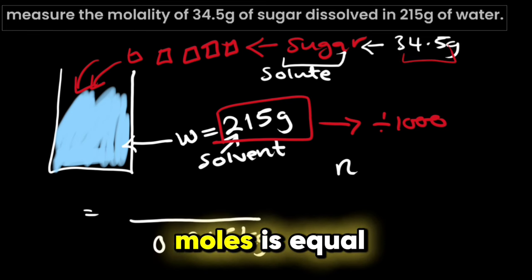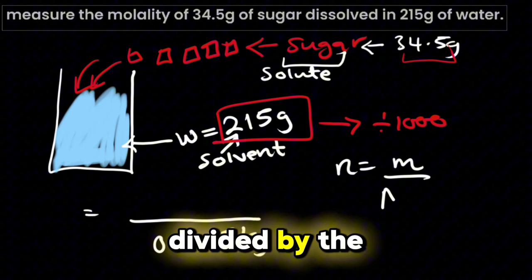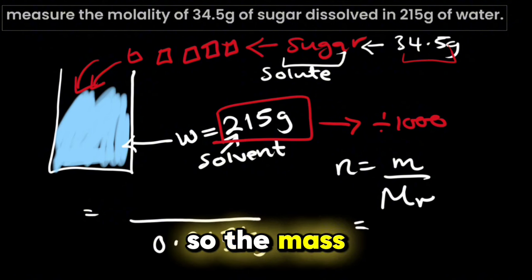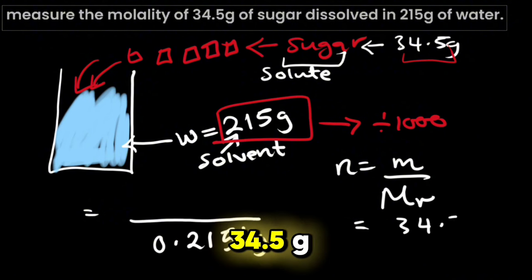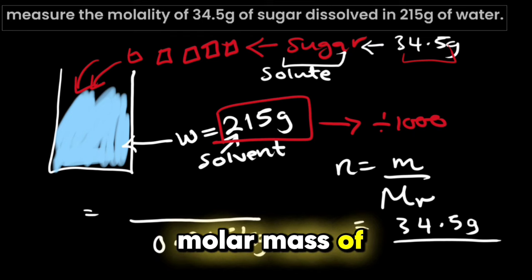We know that the number of moles is equal to the mass divided by the molar mass. So the mass is given as 34.5 grams divided by the molar mass of sugar.